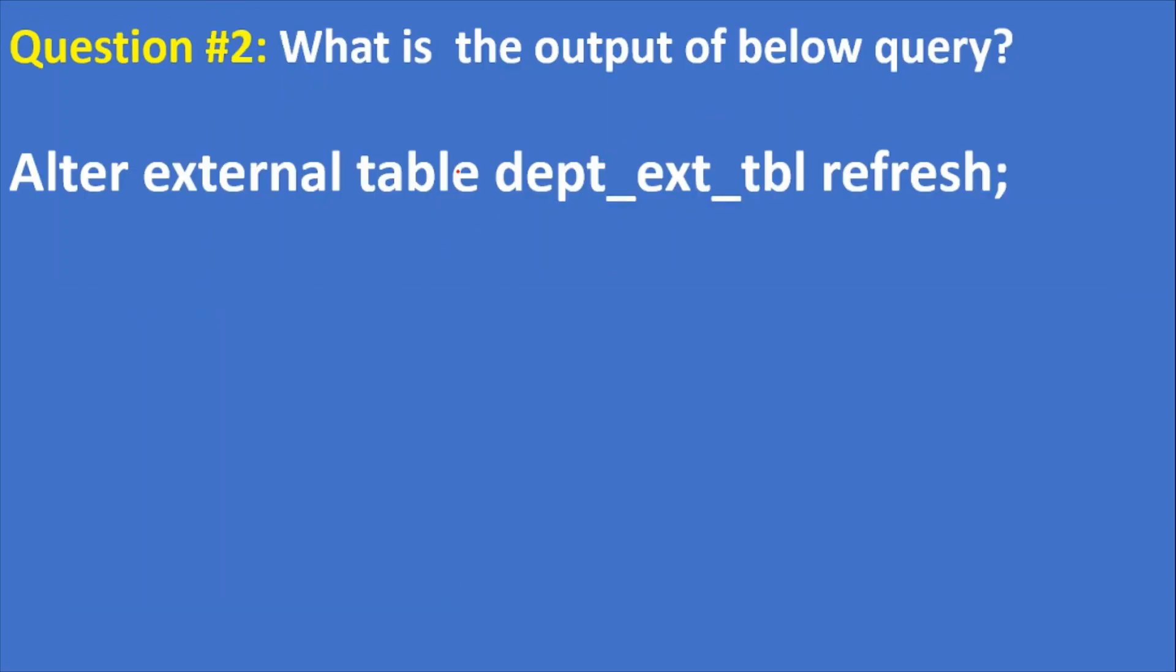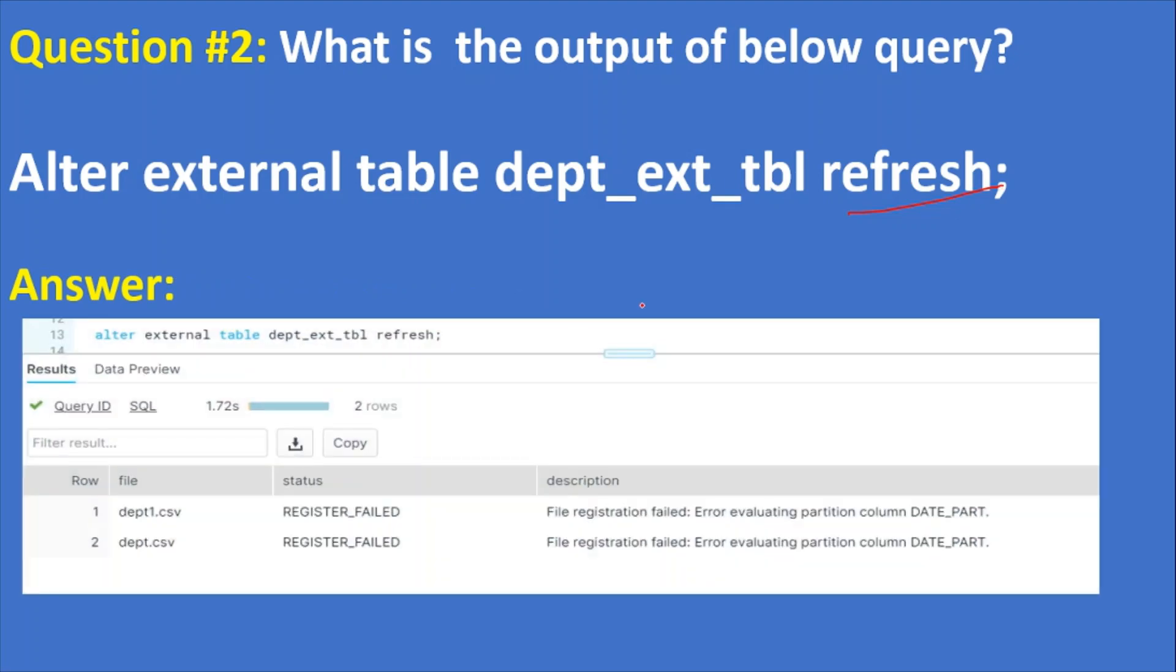Now the question is: what is the output of below query? The query is alter external table refresh. The answer is: two files dept1.csv registered failed status. If you see, status register_failed for this file and for this file also register_failed. What about the other two files? Two files are valid files with having the date, based on the syntax while creating the table. The other two files are satisfied. If you see the description, file registration failed - error evaluating partition column date_part. For those two files, date_part evaluation is correct so the two files are registered.